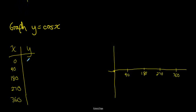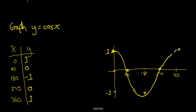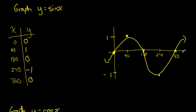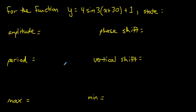The cosine function looks very similar but starts at 1, drops to 0, reaches −1, returns to 0, and goes back to 1 — repeating every 360°. An important distinction: the maximum point of the cosine function is on the y-axis, while for the sine function, the rising midline — where the midline crosses the rising side — is on the y-axis.